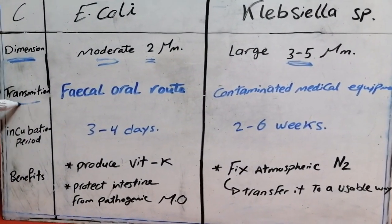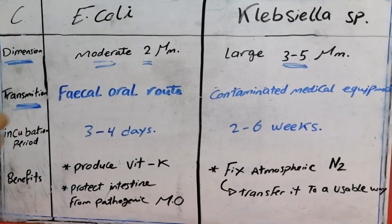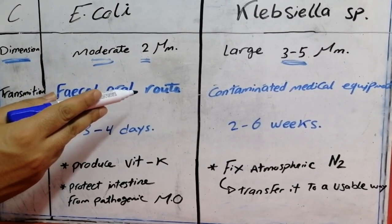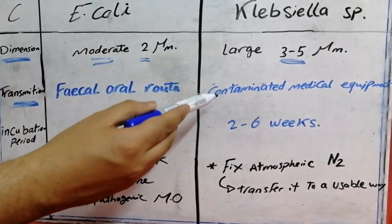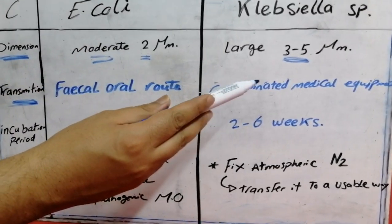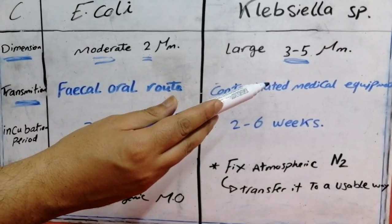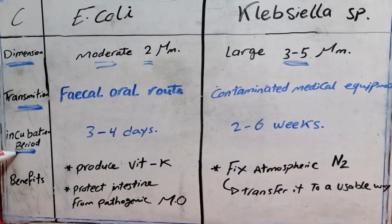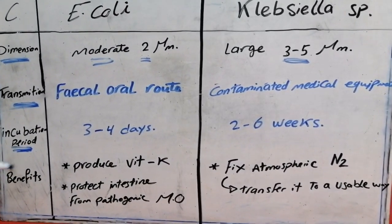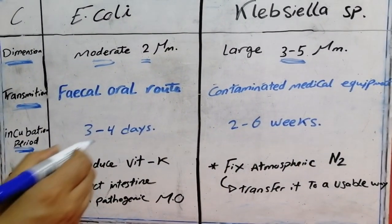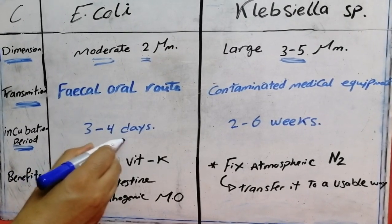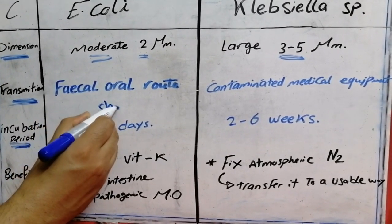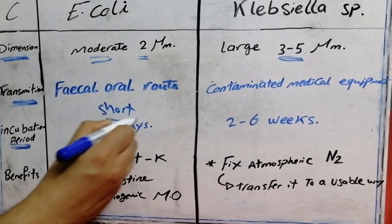E. coli is majorly transmitted from contaminated medical equipment. The incubation period of E. coli is from 3 to 5 days, which is a very short period.